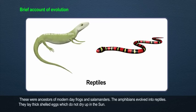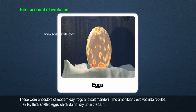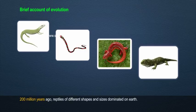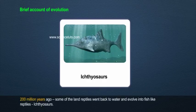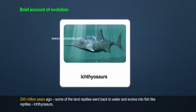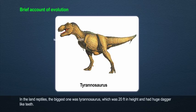The amphibians evolved into reptiles, which lay thick-shelled eggs that do not dry up in the sun. Two hundred million years ago, reptiles of different shapes and sizes dominated the Earth. Some of the land reptiles went back to water and evolved into fish-like reptiles called ichthyosaurs.